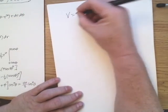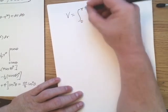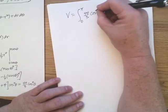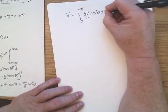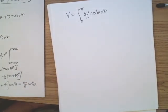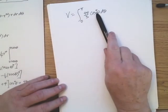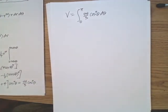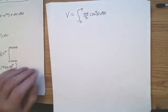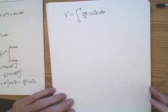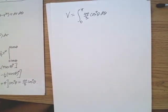Now we integrate 44 thirds cosine to the fourth theta d theta from zero to pi. Recall from calculus 2: if you see an odd power on sine or cosine, integration is straightforward using the Pythagorean identity. But an even power requires more work. We need to use the half-angle identity: cosine squared A equals one plus cosine of two A, all over two.